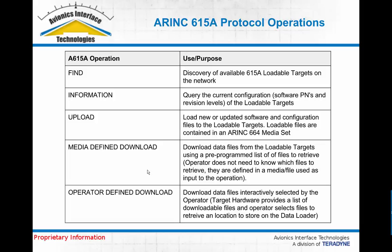The Information operation allows the data loader to request and receive software configuration information from the airborne computer. It specifies the format of the software files, part numbers, and revision level reporting that the airborne computer will provide back to the data loader when requested. The Upload operation is the central operation of 615A — it is used to load loadable software parts from a data loader up to an avionics computer.